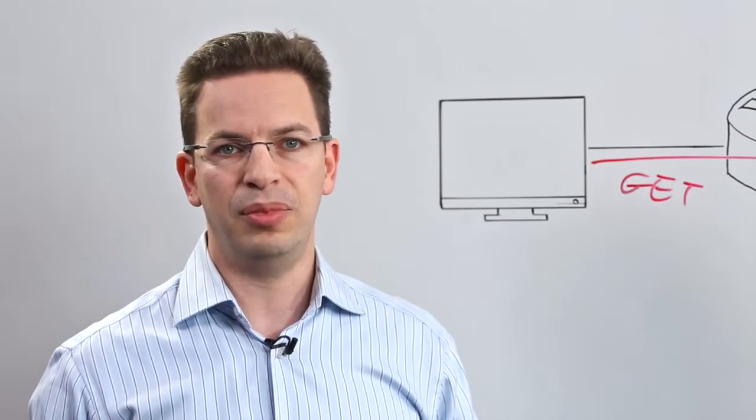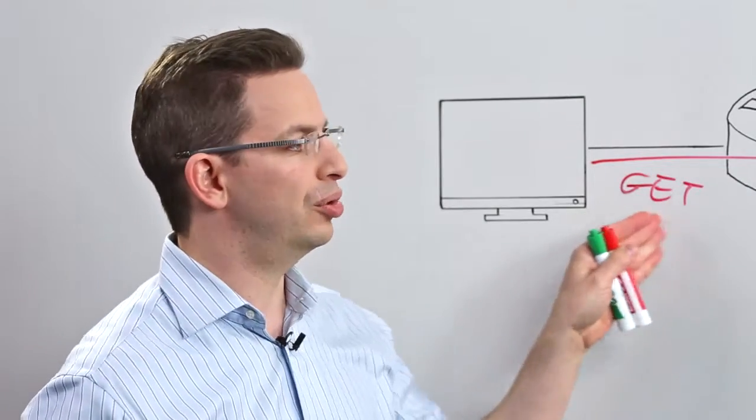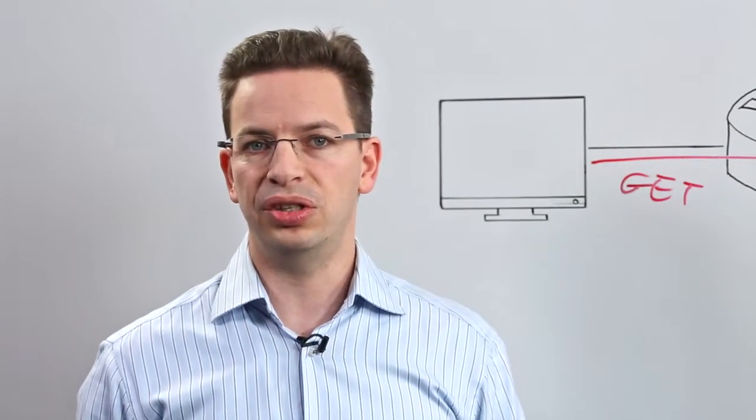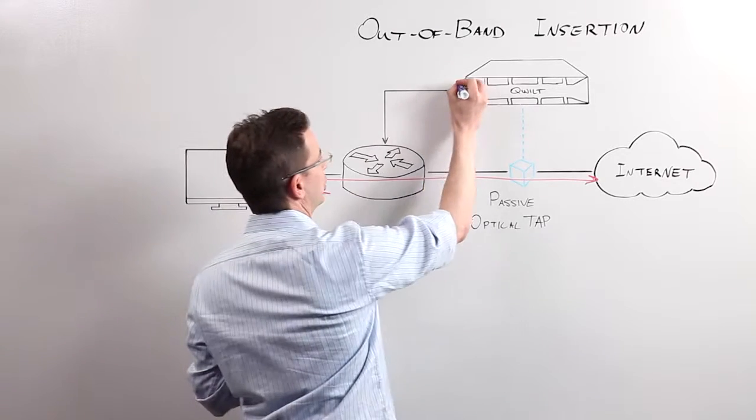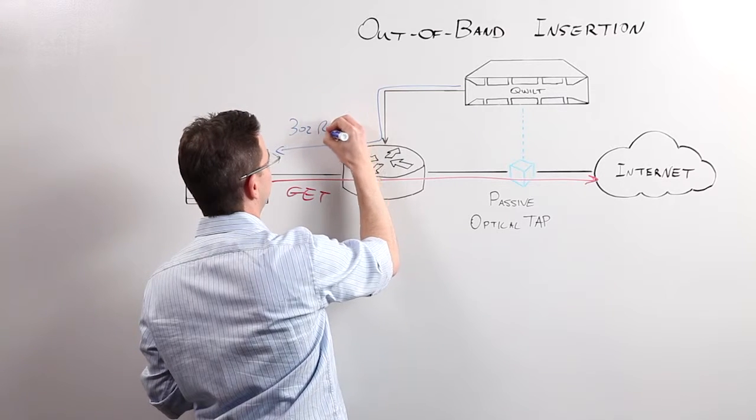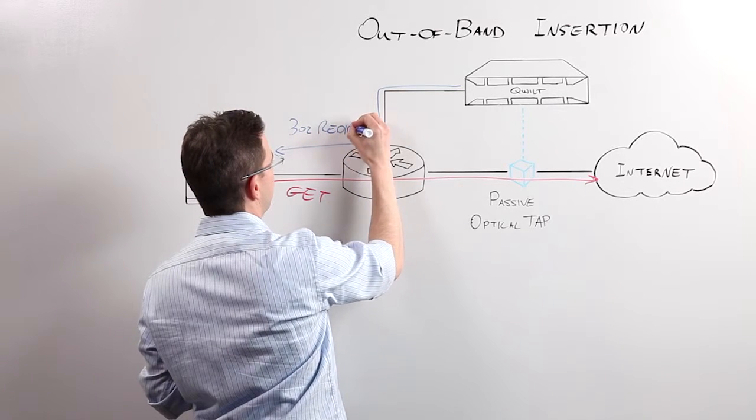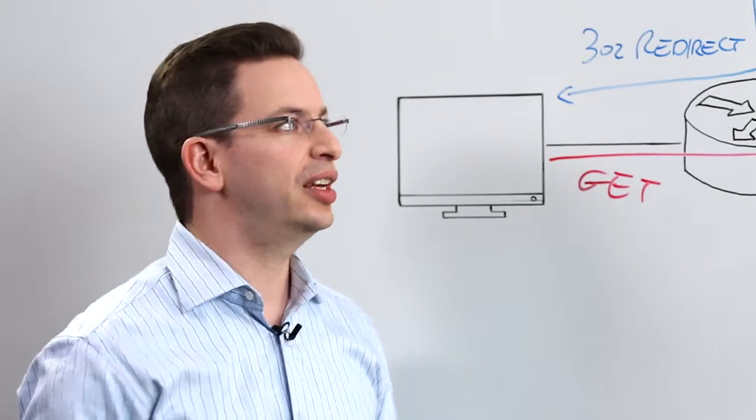If new consumers want to watch the same episode or the same video content, they would issue a similar GET request all the way to the origin server. At that point of the flow, the QB series would issue a new message called a 302 redirect message. The purpose of this message is to inform the client that the content is actually found on board the QB series in near proximity to where the consumer actually is.